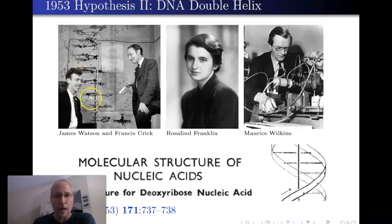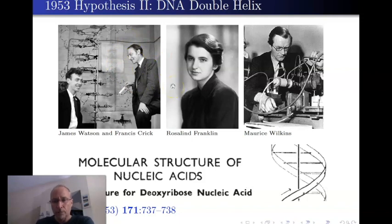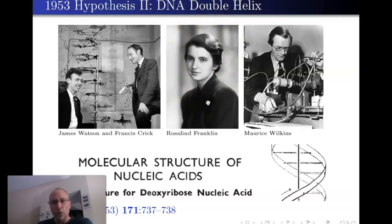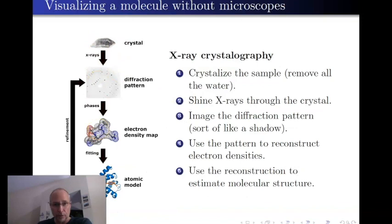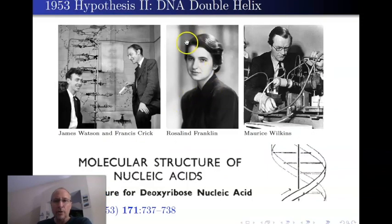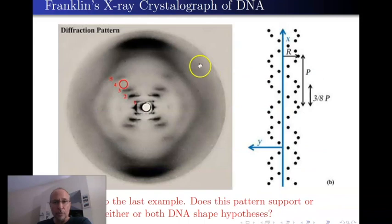Watson is a first-class jackass and everybody hates him, but Crick was a very, very good friend of hers. The point is that she was working primarily on proteins, making this kind of X-ray crystallography picture, but she had happened to do this X-ray crystallography with DNA, which is what Maurice Wilkins was also trying to do at the same time — and he was not having much success. She did, and she made this picture right here.